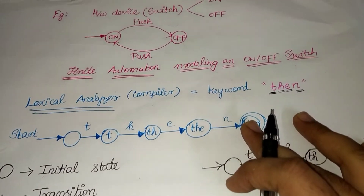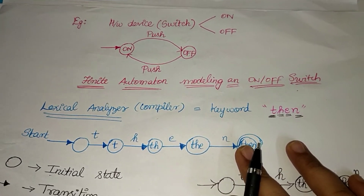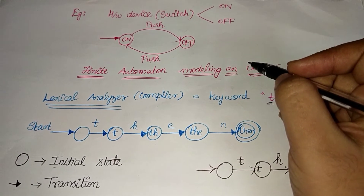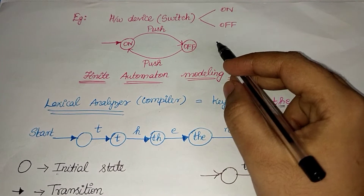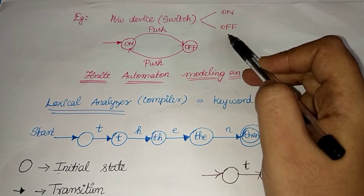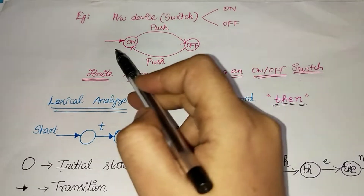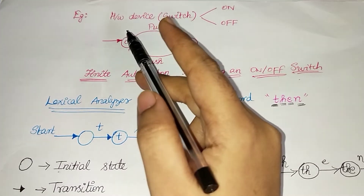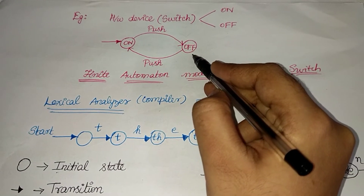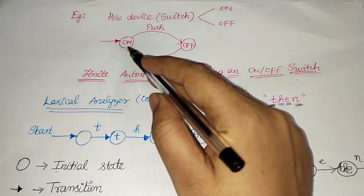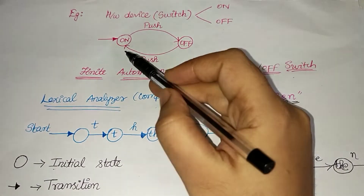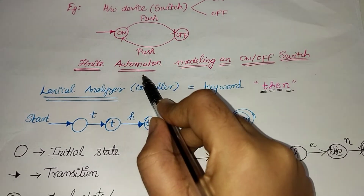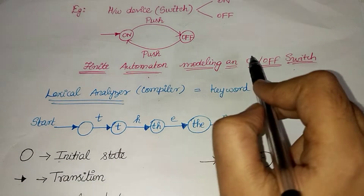Here is a small example: consider a fan switch. It is a hardware switch. You can do two functions — one is on and one is off. If you press the fan switch on, it will turn off. If you push the fan off and press on and off, that is a second operation. This is a Finite Automata model.